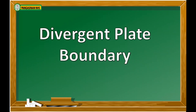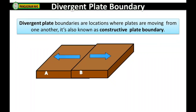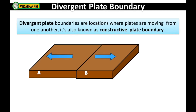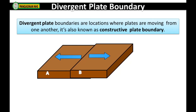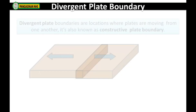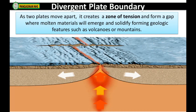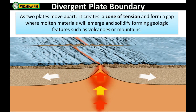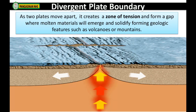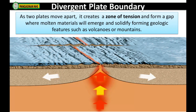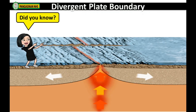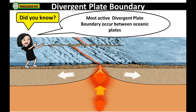Divergent plate boundary: Divergent plate boundaries are locations where plates are moving away from one another. It is also known as a constructive plate boundary. As two plates move apart, a zone of tension is created, forming a gap where molten materials emerge and solidify, forming geologic features such as volcanoes or mountains. Did you know? Most active divergent plate boundaries occur between oceanic plates.